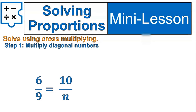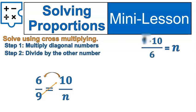Welcome back. Step number 1, multiply the numbers that are diagonal. Step number 2, divide by the remaining number. So in this case, I would have 9 times 10 divided by 6. 9 times 10 is 90. I'm sorry. 90 divided by 6 is 15.